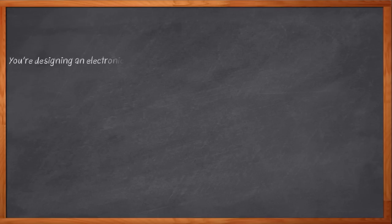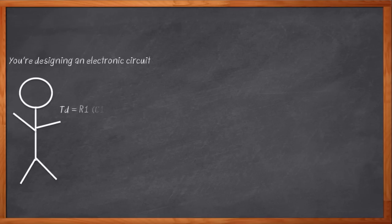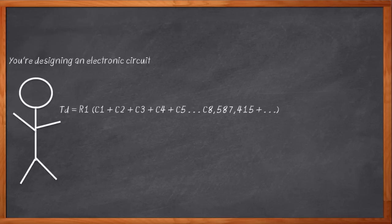As engineers, we're constantly aware that the thing we are designing is an electronic circuit. We know that there's resistance and capacitance in our wires, and that these things interact in complicated ways when we start connecting components together. If you're designing a complex IC, just thinking of all that math required to solve all those RC equations can make your eyes gloss over a little bit.